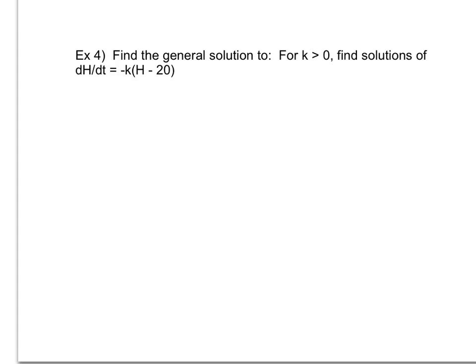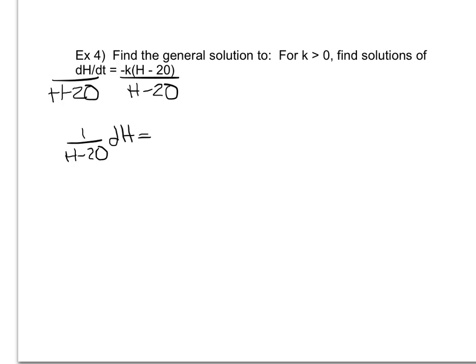So k is always just some constant, some constant of variation, some slope. I'll get my h's on one side and let k hang out with dt since there are no other t's. I'll divide both sides by (h minus 20), giving me dh over (h minus 20), which is the same as (1 over h minus 20) dh. Multiplying both sides by dt leaves me with negative k dt.